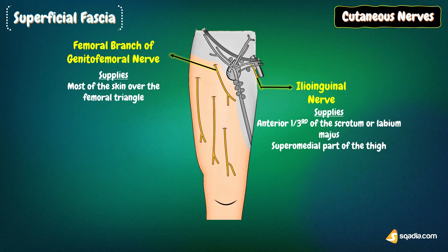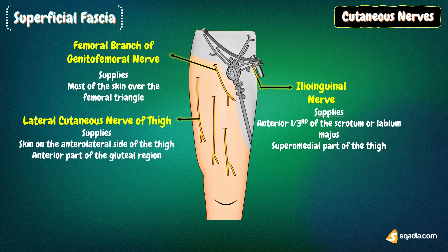The lateral cutaneous nerve of the thigh is a branch of the lumbar plexus. It emerges behind the lateral end of the inguinal ligament, divides into anterior and posterior branches, and supplies the skin on the anterolateral side of the thigh and on the anterior part of the gluteal region.